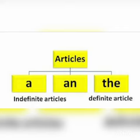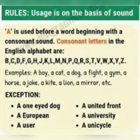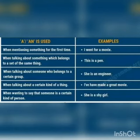The article 'a' is used before words beginning with a consonant or a consonant sound, though there are certain exceptions. The article 'an' is used before words beginning with a vowel or a vowel sound. Again, there are exceptions, such as 'an heir' or 'an honest man'.